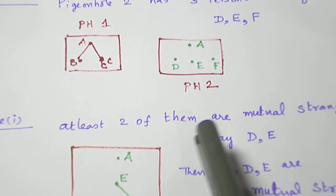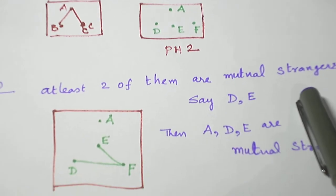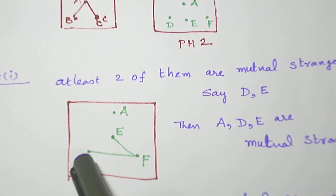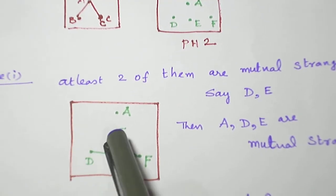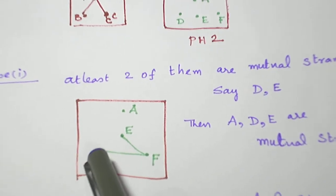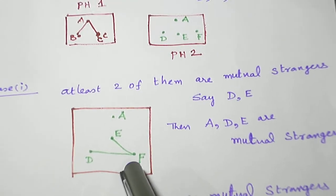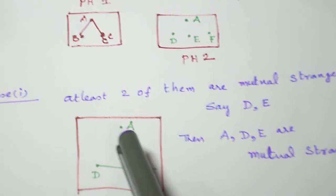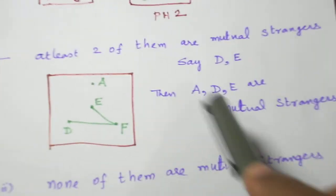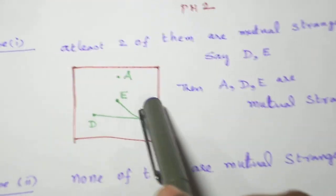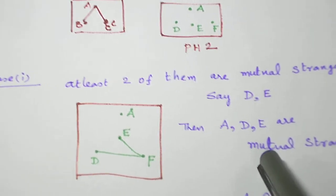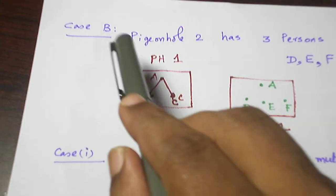At least 2 of them are mutual strangers in pigeonhole 2. So I take they are D and E, D and E are mutual strangers. So automatically D and F and E and F are friends. Now if you take A, D, E, they are mutual strangers to each other. So case 1 we got 3 mutual strangers in case B.